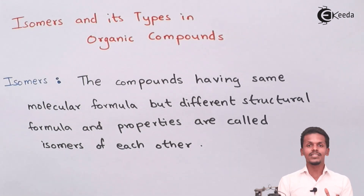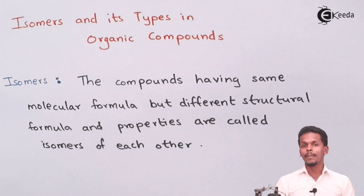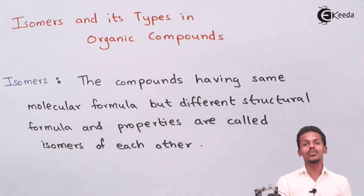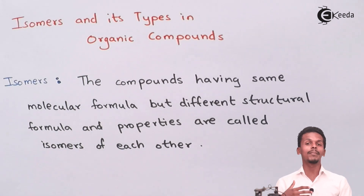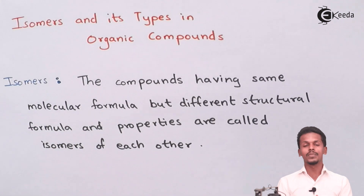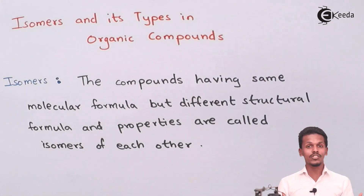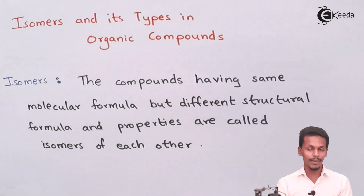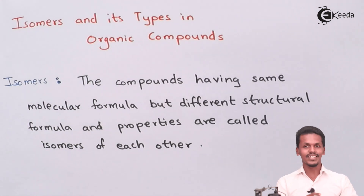That is what makes two molecules isomers of each other. But it is not necessary that only two molecules would be isomers — there can be multiple molecules that are isomers of each other. Based on this, isomers are of different types, and let us talk about those types.